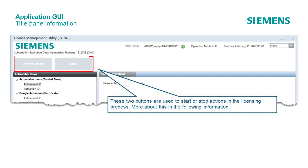These two buttons are used to start or stop actions in the licensing process. More about these in the next chapters. The other panes and their functionality will be shown in connection with the following parts of the learning. For this reason, we end this part here.